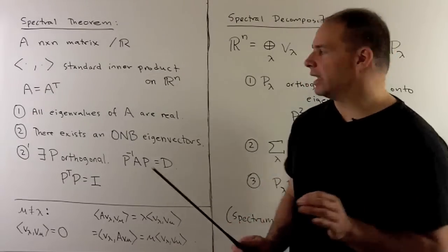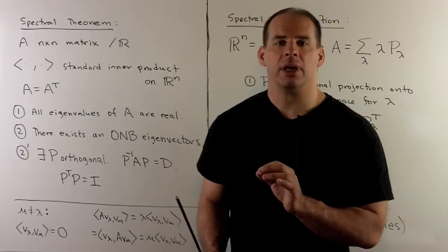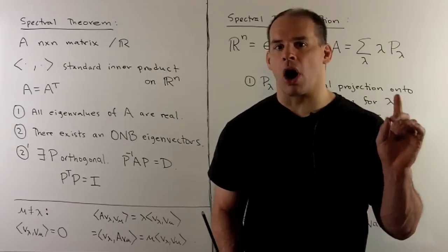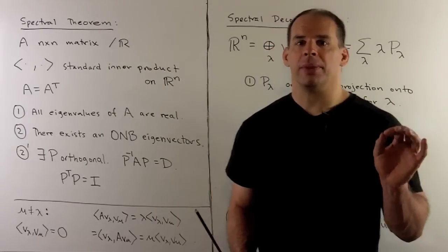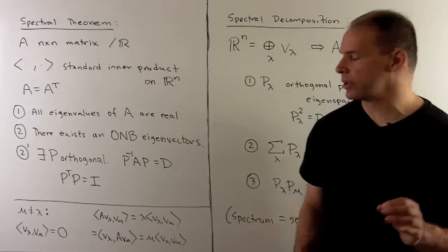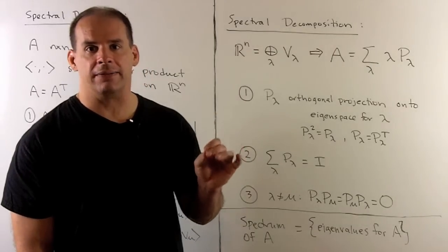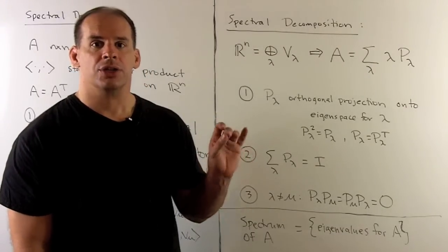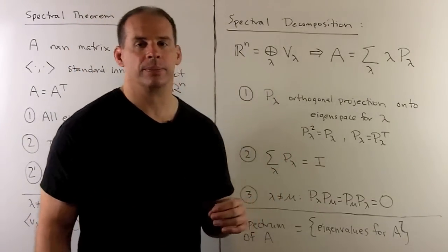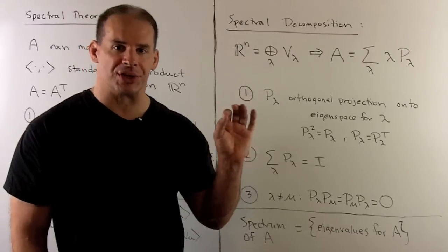Lurking in the background of all this, we have our eigenspaces. In this case, our eigenspaces are going to be orthogonal subspaces of R^n. That's just a simple argument when we assume we have two distinct eigenvalues. By our second statement, we have a basis of eigenvectors for R^n. So we can write R^n as an orthogonal direct sum of our eigenspaces. If we consider how A acts on each eigenspace, we can write A also as a sum.